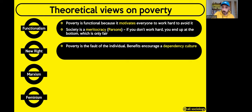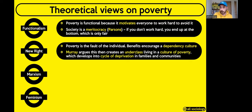The new right take a similar but extended view — poverty is the fault of the individual for not working hard enough, but the government makes things worse. Charles Murray argues benefits encourage people not to work, creating a dependency culture and a culture of poverty. Growing up with parents on benefits socialises children into seeing not working as normal. Murray calls this the cycle of deprivation — a cycle very difficult to break, infecting families and communities.